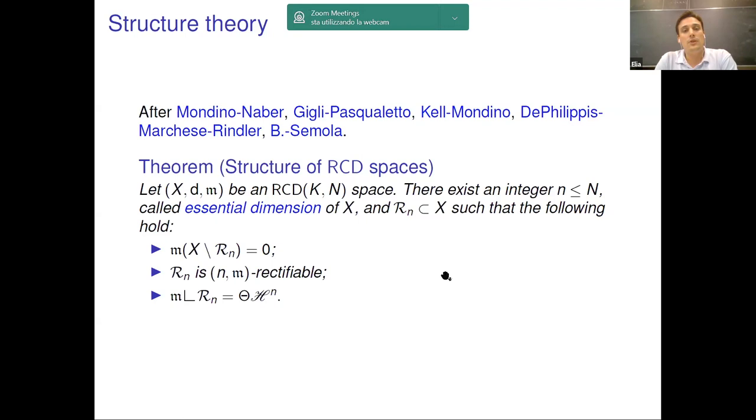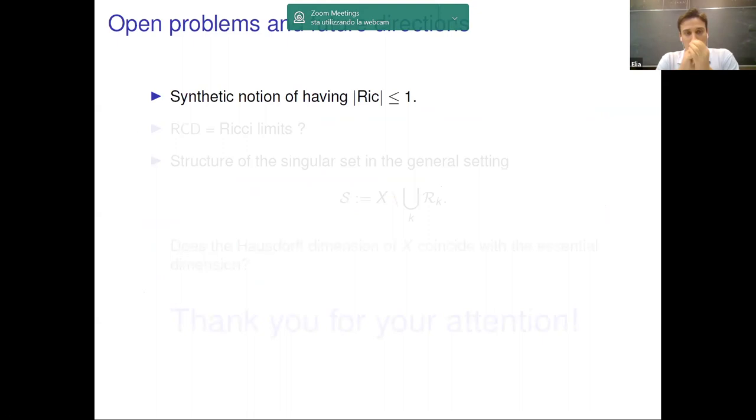This is a general structural result, which is completely analogous to the one proven by Cheeger-Colding for the class of Ricci limit spaces. There are, of course, many other structural results. We have also structural results for co-dimension one sets like boundary sets of Caccioppoli sets. But I think this is enough to get a feeling of the structure of these spaces. Let me just present three open problems which I find really interesting.